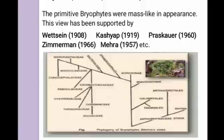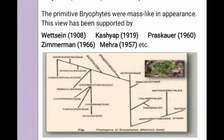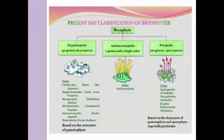Nowadays, bryophytes are classified into three subclasses. The first is Hepaticopsida, the second is Anthocerotopsida, and the third is Bryopsida. Hepaticopsida has 330 genera and 8,000 species. Anthocerotopsida has 7 genera and a single order, while Bryopsida has 700 genera and 14,000 species.